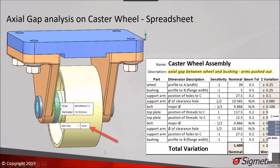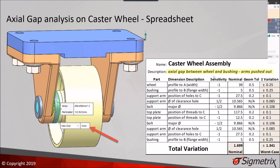In order for the wheel to serve its function of spinning and allowing whatever this is attached to roll, this distance needs to be greater than zero. On the right-hand side, you see a spreadsheet analysis — a very simple stack-up. Starting from the wheel, working through the bushing, the support arm, the bolts, and completing the loop on the left-hand side — that's what the spreadsheet reflects. I put in the nominal distances for all of these features along with the geometric tolerances where applicable.